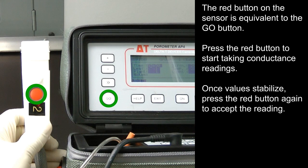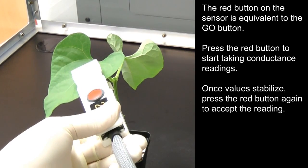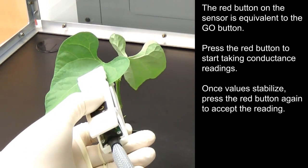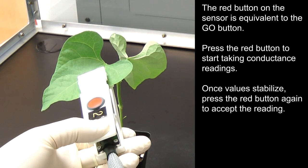The red button on the sensor is equivalent to the Go button. Press the red button to start taking conductance readings.